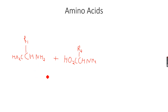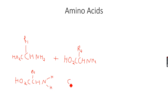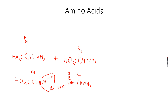When they react, let me expand these groups and write them out. I will expand the amine group because this is what we are dealing with right now. We have CH-NH₂ and we have side chain R2 attached to it. This is the amine group of this amino acid, and this is the carboxylic acid group of this amino acid. These two groups react together.